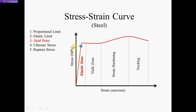The elastic limit occurs just above the proportional limit — it is the high point right here. The elastic limit is basically where the material behaves elastically. The elastic limit is where the material could stretch like a rubber band, and when you release the load, it goes back to its original shape.